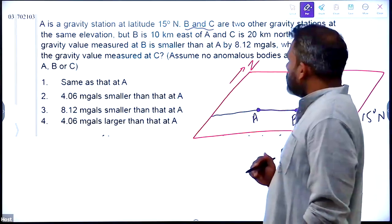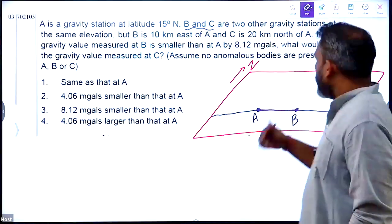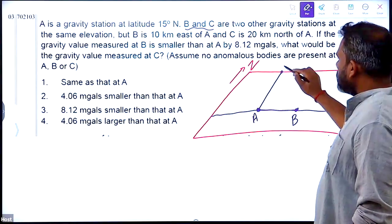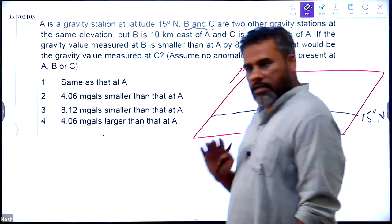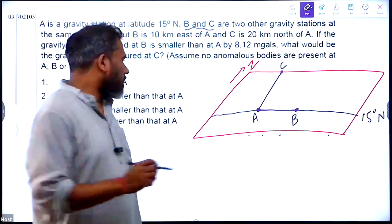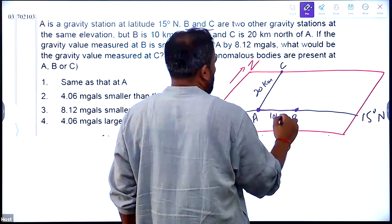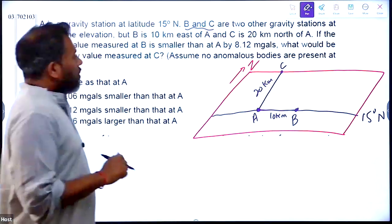And C is 20 km north of A. So, 20 km maybe this much. This is C. This is 20 km and this is 10 km.